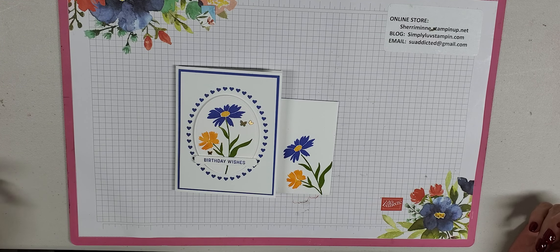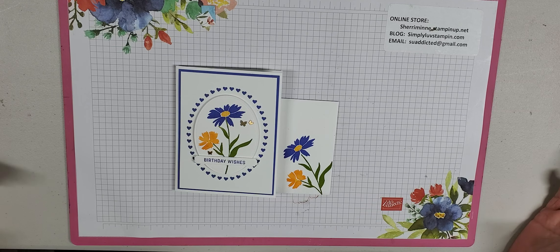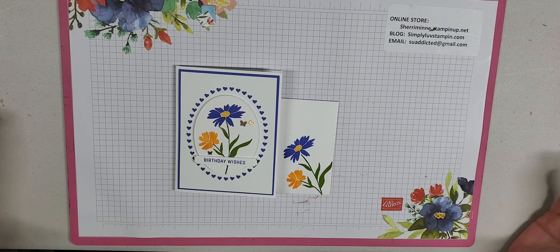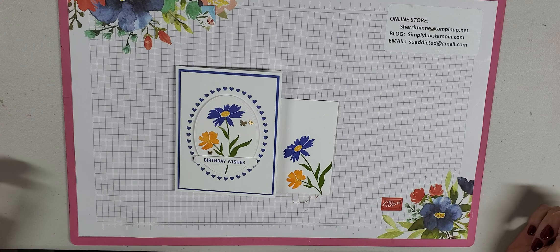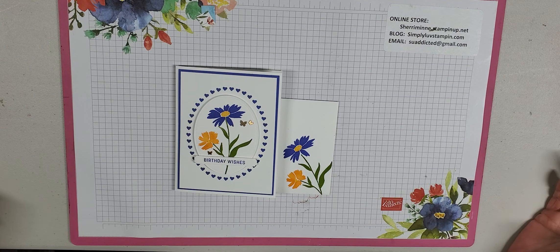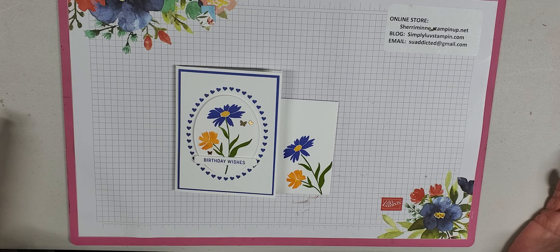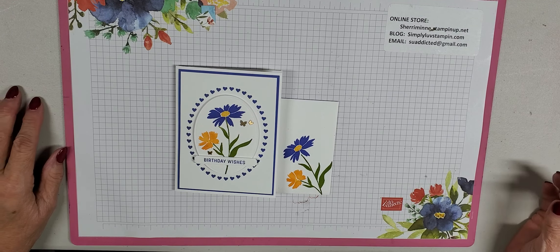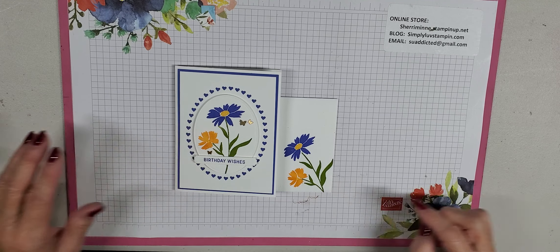So today we're going to do a birthday card. This is featuring a bundle that is actually going to be in the new catalog, which will be the January to June 2023 mini catalog. That'll come out January 1st. And I'm using basically the dies from this bundle. It was an early release and it is now available for purchase.